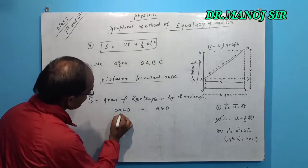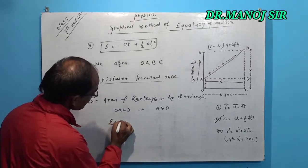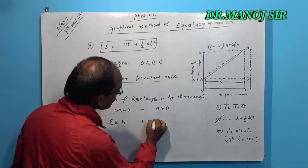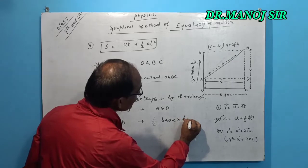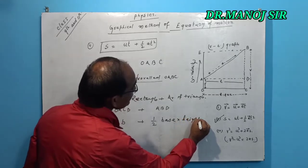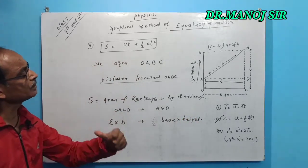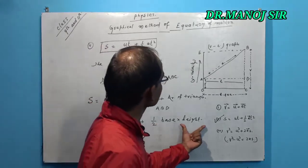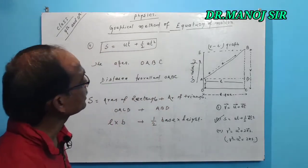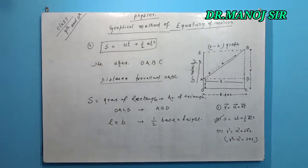So, length times breadth plus half base into height. Now, putting the value of base and length, base and height, of this area O A B C.